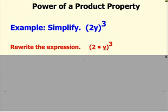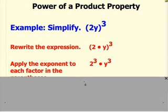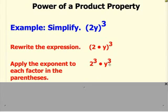So, what this property basically says is you will take the exponent of 3 and apply it to every single factor within the parentheses. So right now, we're going to have 2 cubed times y cubed.